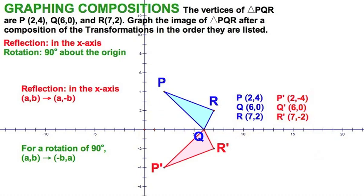2, 4 maps to 2, negative 4. 6, 0 stays right there on the x-axis. 7, 2 maps to 7, negative 2. Let's take that red figure and we're going to rotate it there.